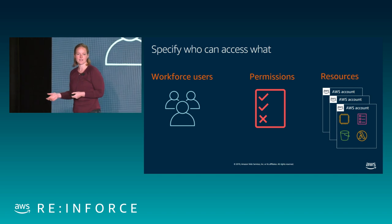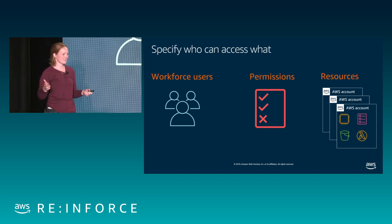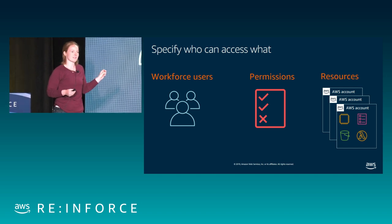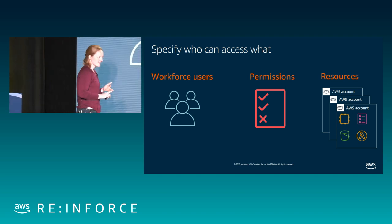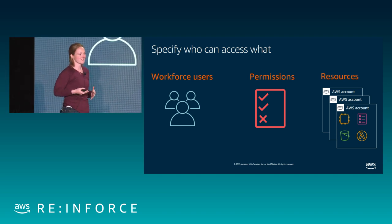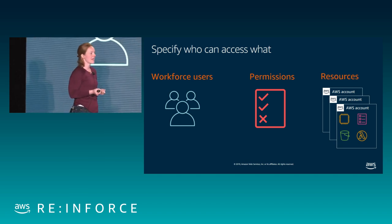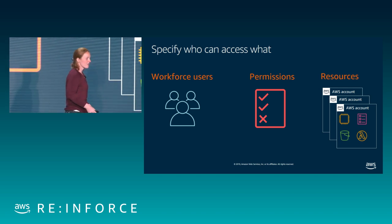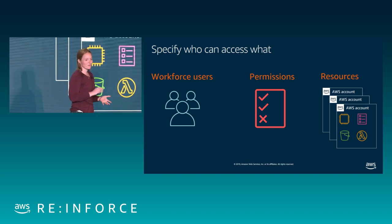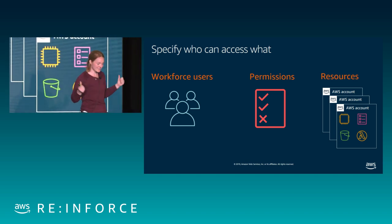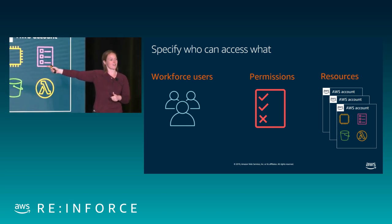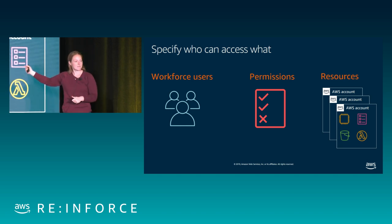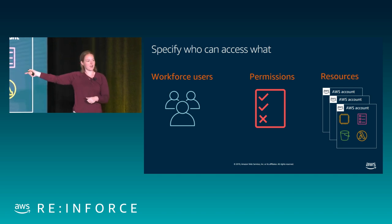It always comes down to: who has access to what? The "who" can be a workforce user, an application, a developer, or anyone doing data analysis. Today's examples will just use users — they're humans, easy to depict on slides — but the same models apply to applications. The "what" is AWS resources: your buckets, CloudWatch alarms, Lambda functions, secrets in Secrets Manager. Fun fact: there are over 300 resource types in AWS. And permissions — the part in the middle — connect it all together.